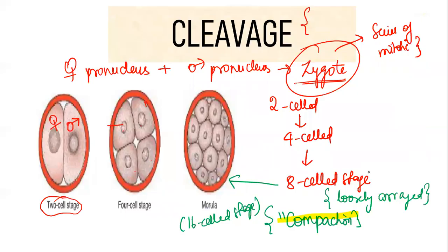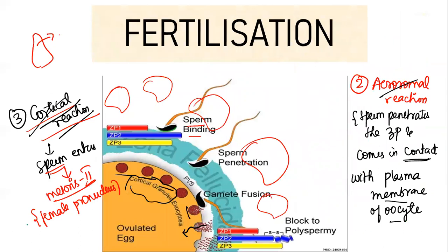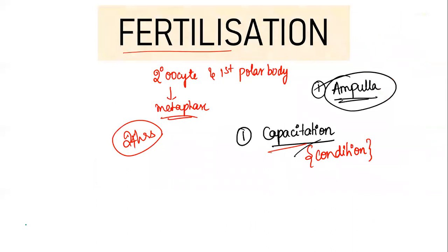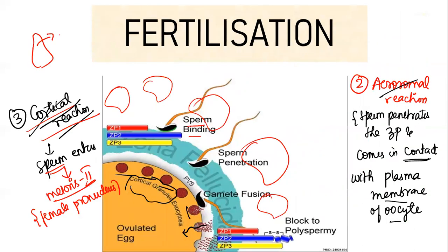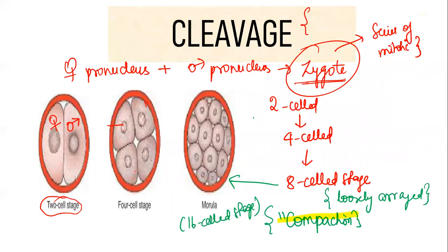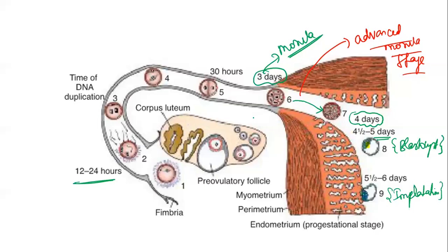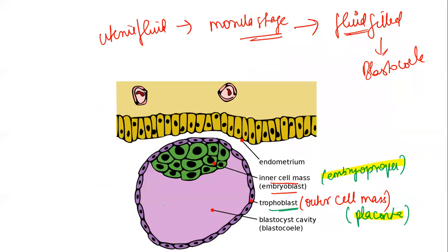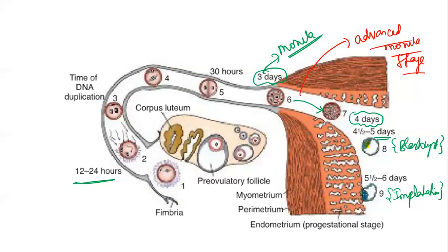To recap what you need to know: fertilization events — capacitation, acrosomal reaction, cortical reaction; then cleavage — 2, 4, 8 cell, compaction, 16-cell morula; morula becomes advanced morula, enters uterine cavity where uterine fluid invaginates forming outer cell mass (trophoblast → placenta) and inner cell mass (embryoblast → embryo proper) with blastocele cavity. Implantation happens approximately 5 to 7 days. This completes first week development.